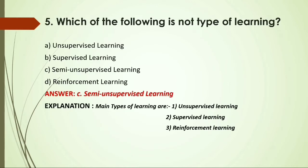MCQ: Which of the following is NOT a type of learning? Options: A) Unsupervised learning; B) Supervised learning; C) Semi-unsupervised learning; D) Reinforcement learning. Answer: C, semi-unsupervised learning, because the main types of learning are unsupervised learning, supervised learning, and reinforcement learning.